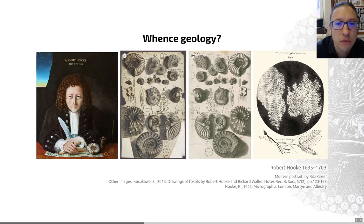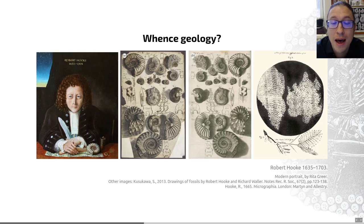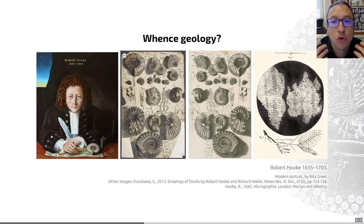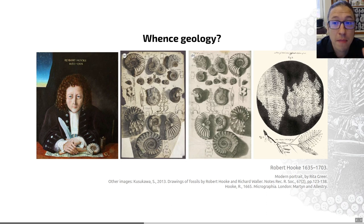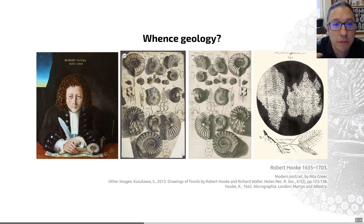Isaac Newton, who is famous for his work in physics in particular, and Hooke had a large falling out. Isaac Newton actively did quite a lot to try to obfuscate his legacy, to try to make sure people didn't really remember him. But a famous example you may have heard of is Hooke's Law, which is named after this gentleman.